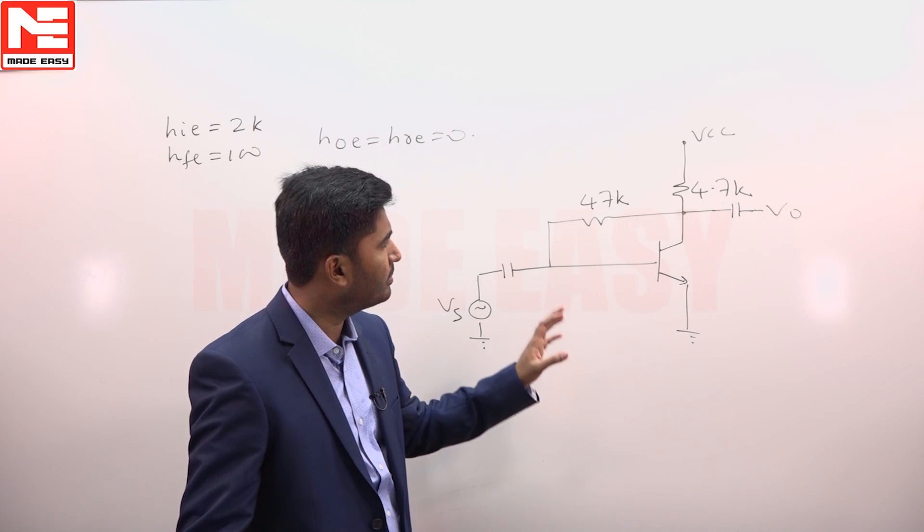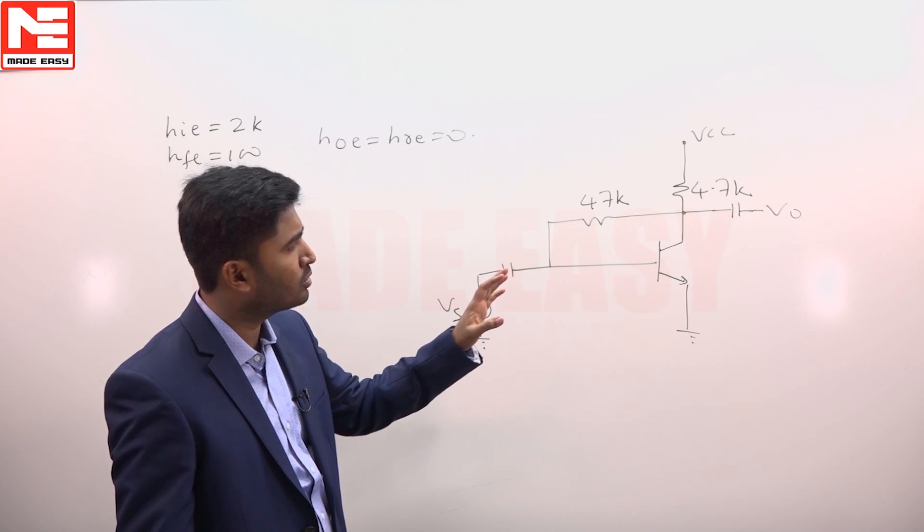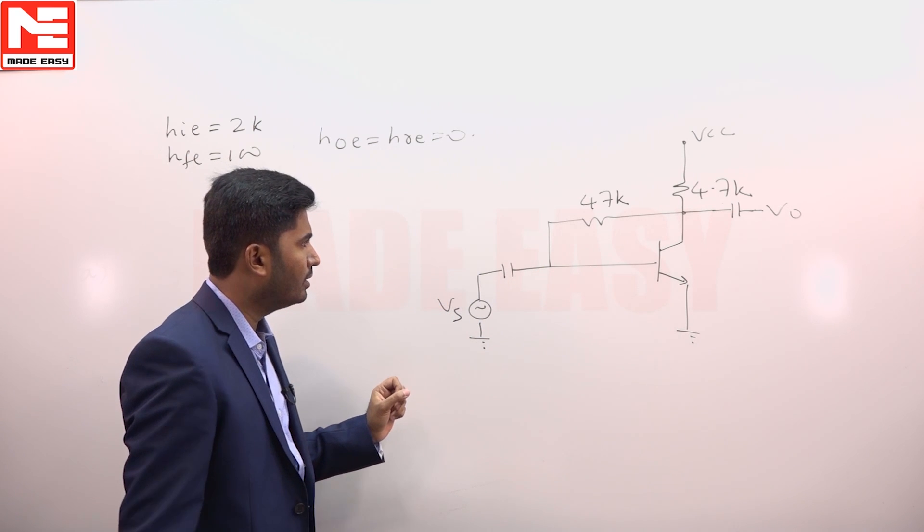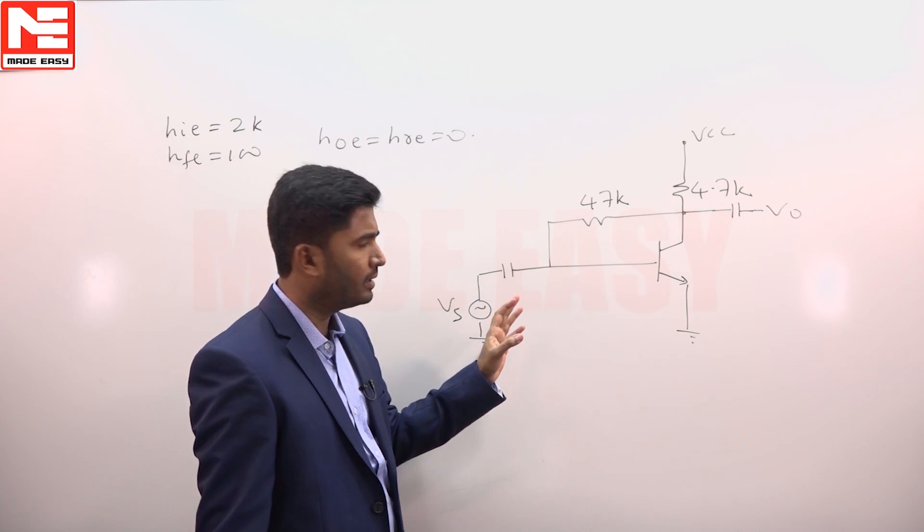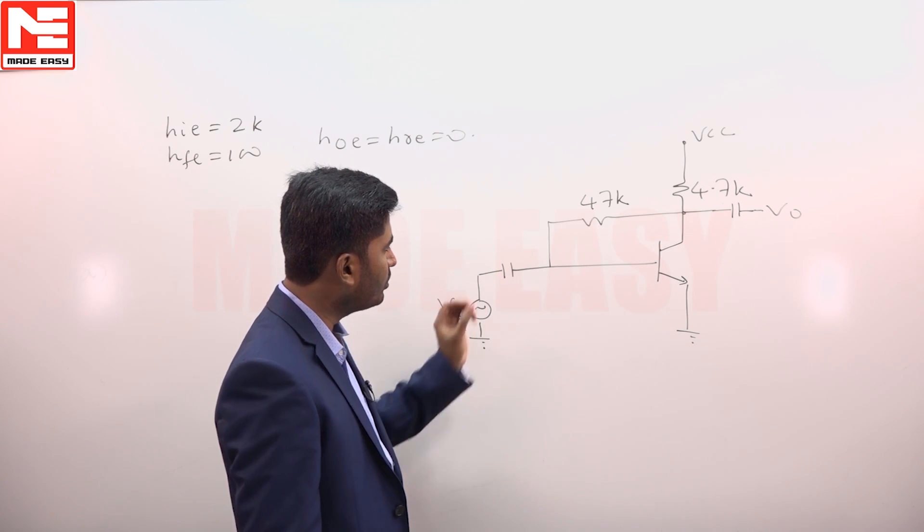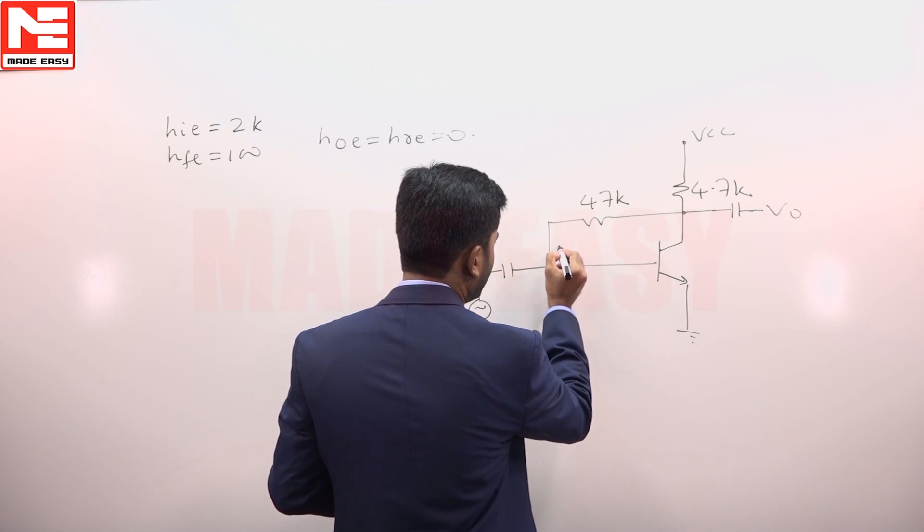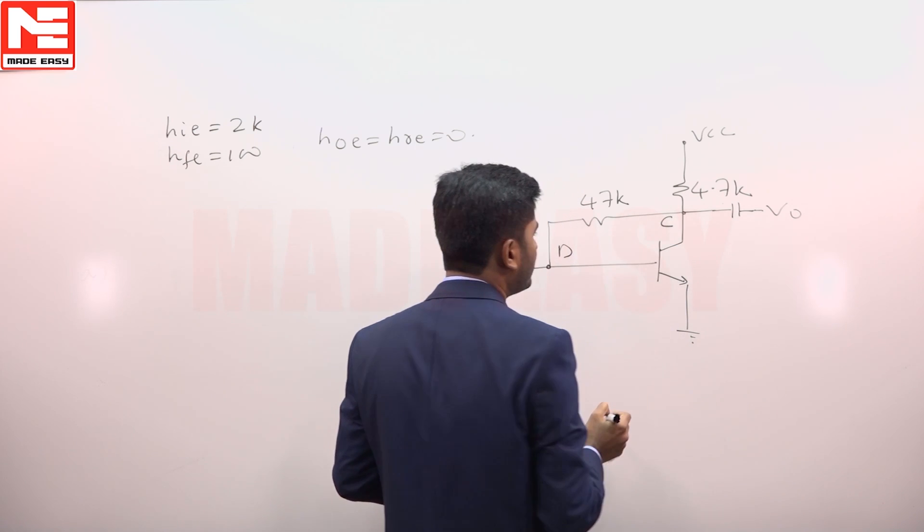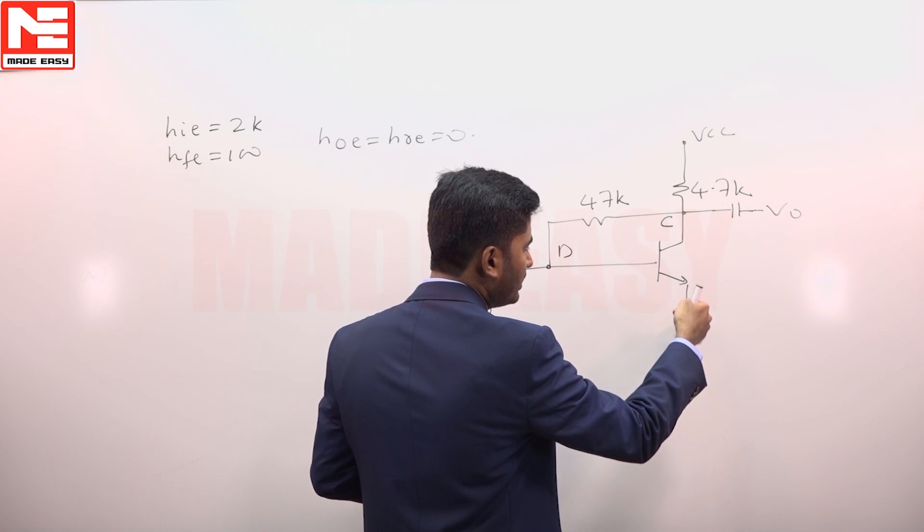This question is about a BJT amplifier in which we are supposed to calculate the gain V naught upon V s. In this circuit, input signal is given towards base, base is the input terminal, and output taken from collector. Collector is the output terminal and emitter node is grounded.